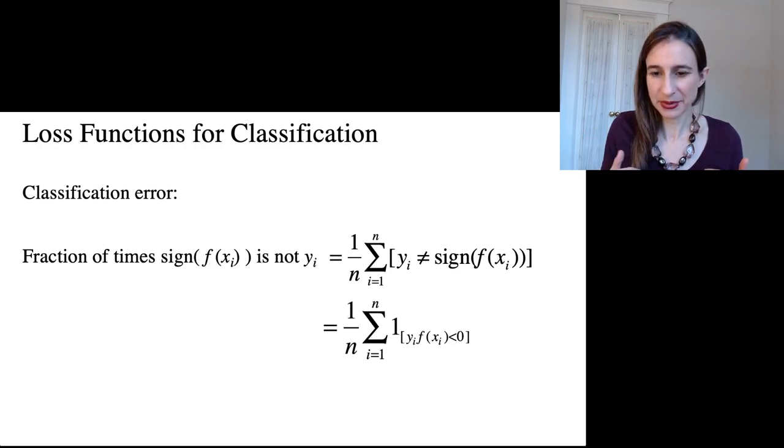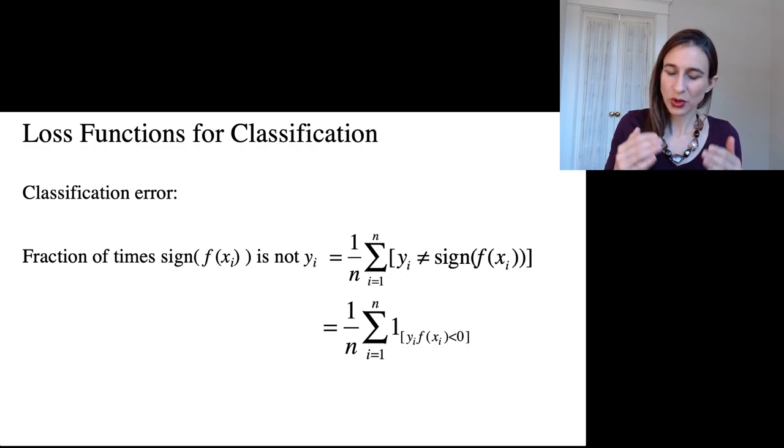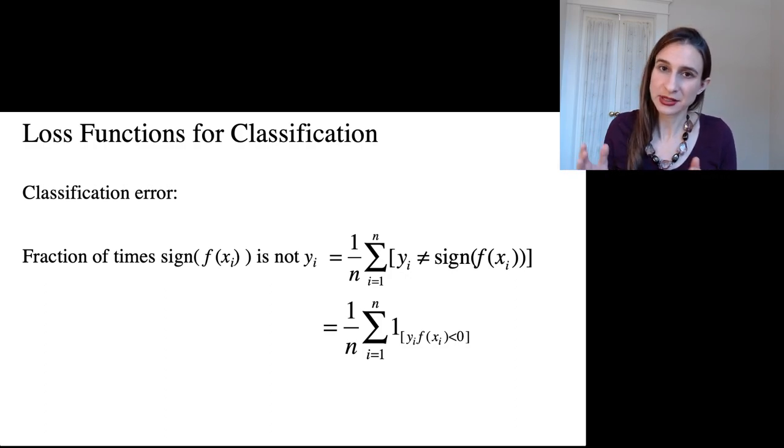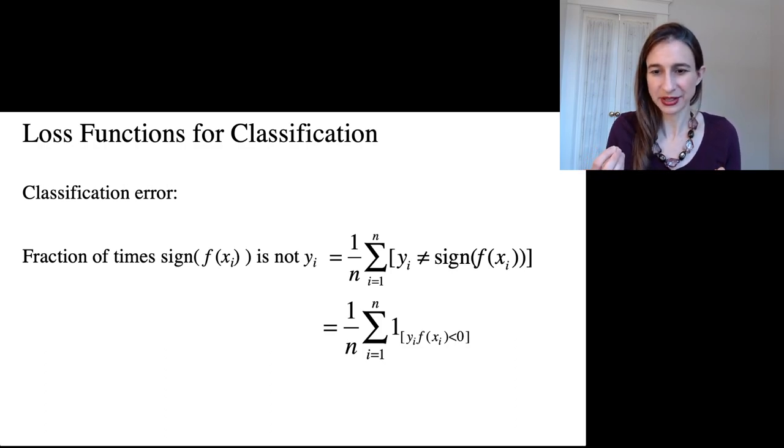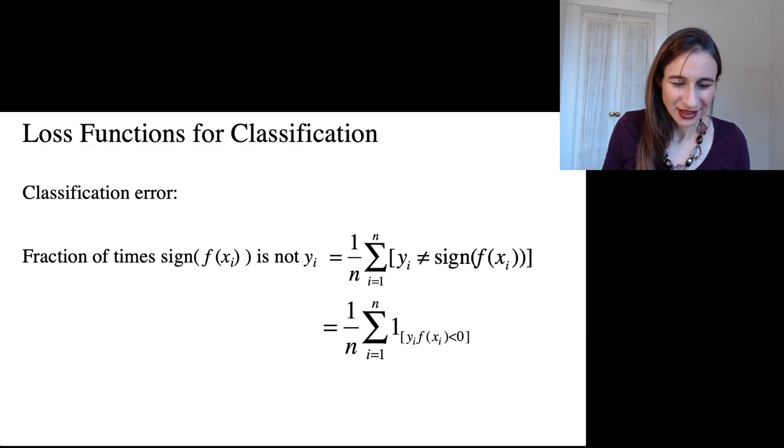The first step in this is to rewrite y doesn't equal the sign of f as y times f is less than 0. These two quantities are the same because if y and f have opposite signs, then y doesn't equal the sign of f and y times f is less than 0. And if they have the same sign, then y equals the sign of f and y times f is greater than 0.